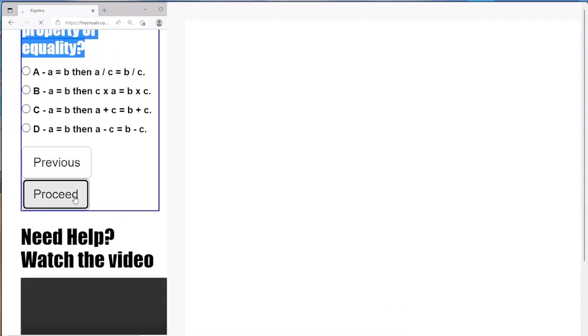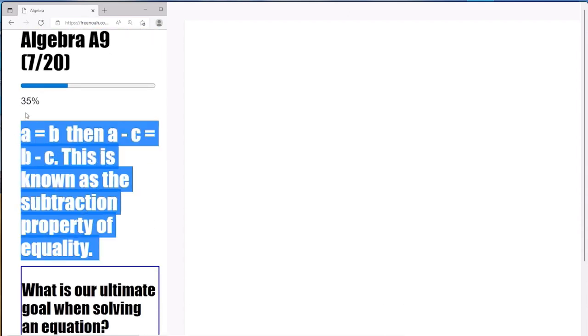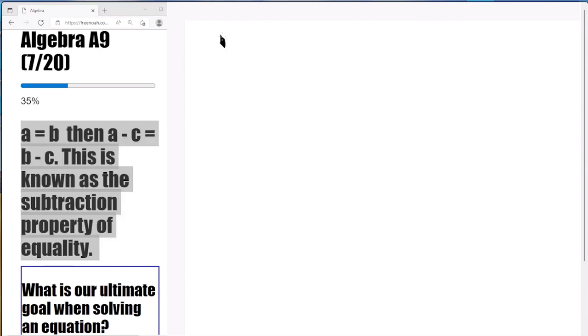Building up on our last video here, we're going to move on to the subtraction property of equality. So what is the subtraction property of equality? If A equals B, then A minus C equals B minus C. This is known as the subtraction property of equality.